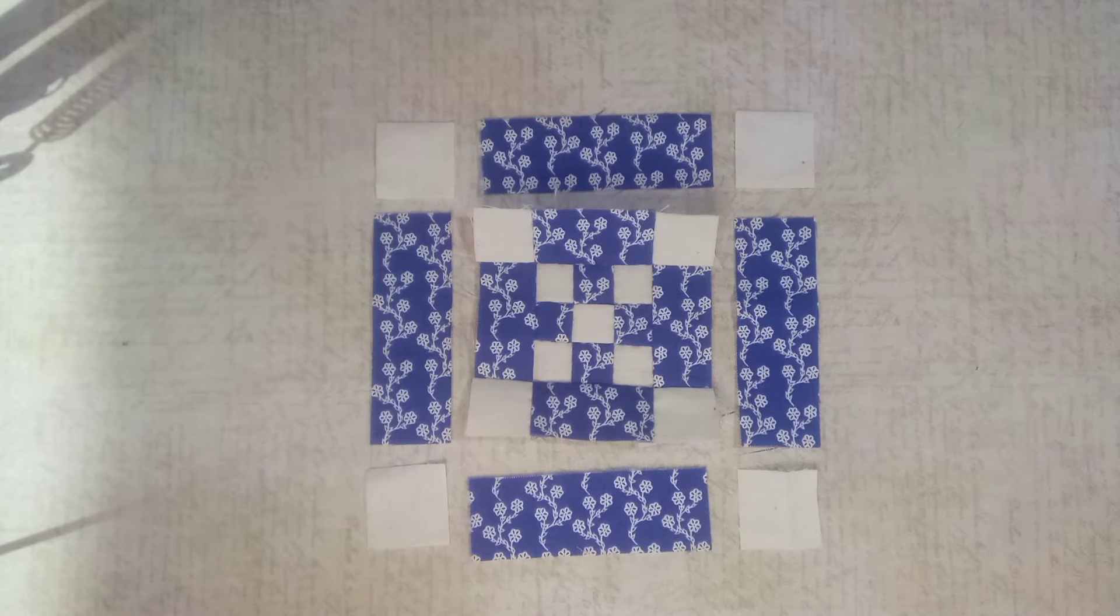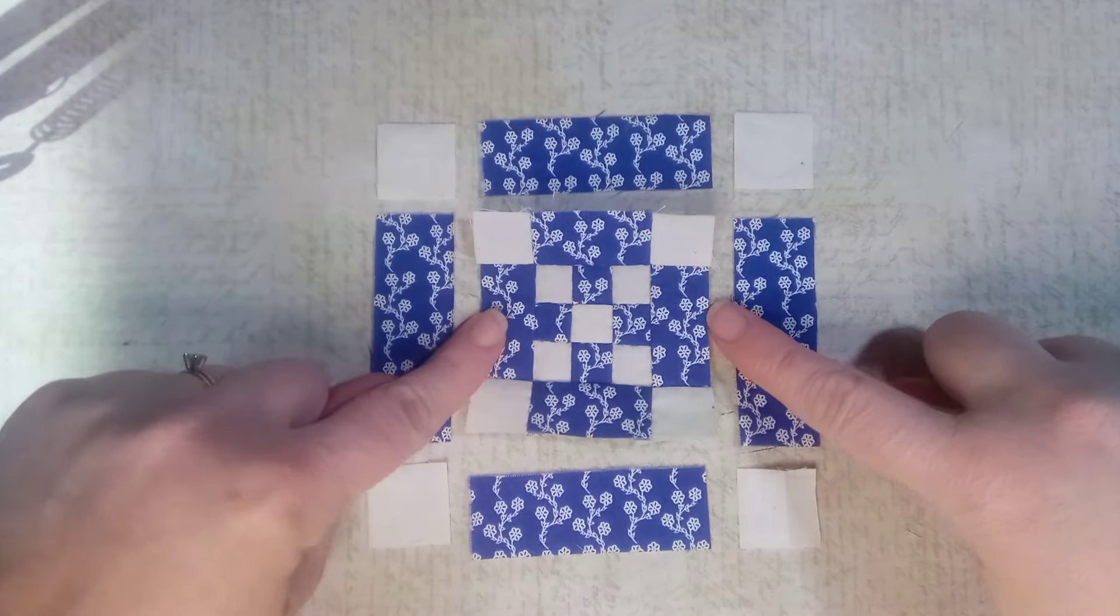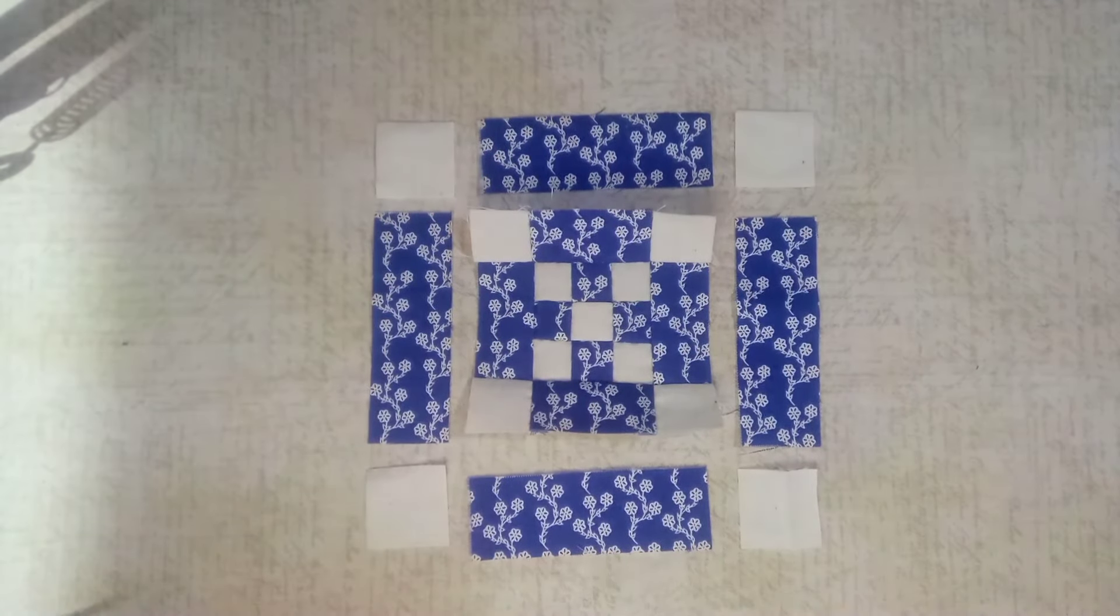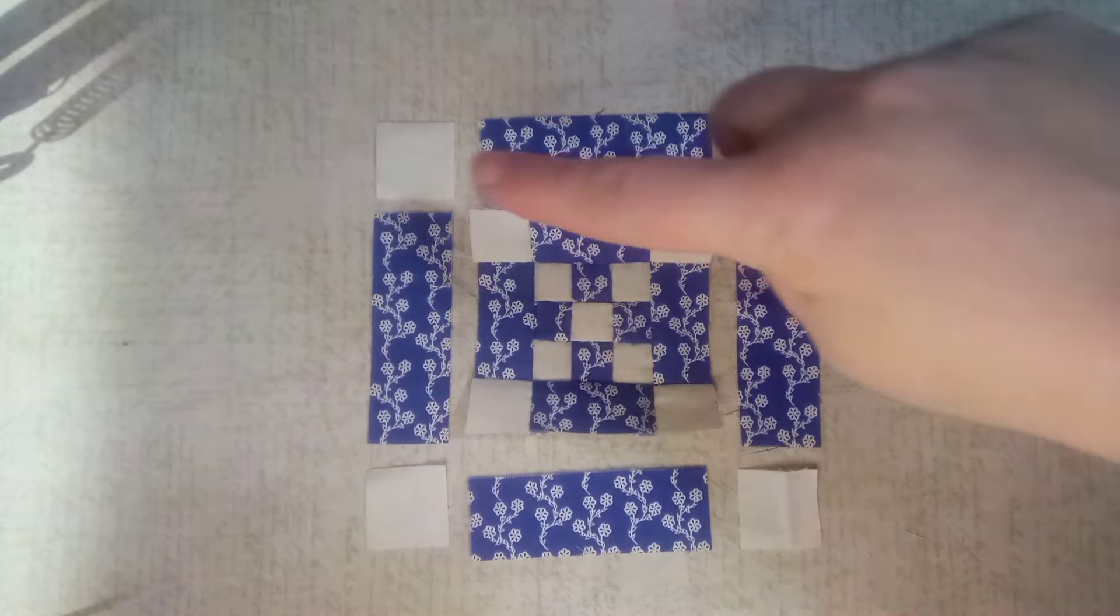Once again, each time you press the seams, press them so that they are opposite. So the middle will go one way and these other two will go the other way so that they'll all butt up really nicely together. So let's get these rows sewn together and then them all sewn into one unit.